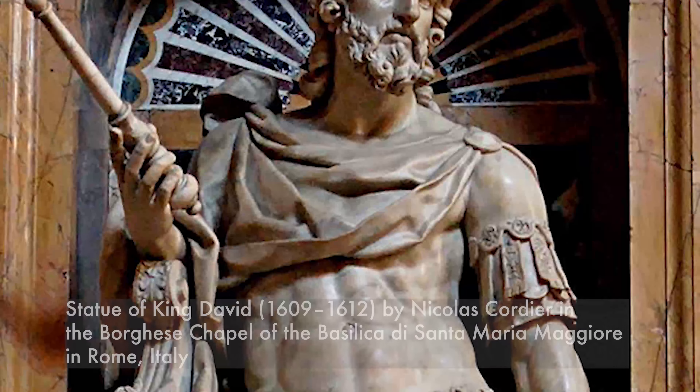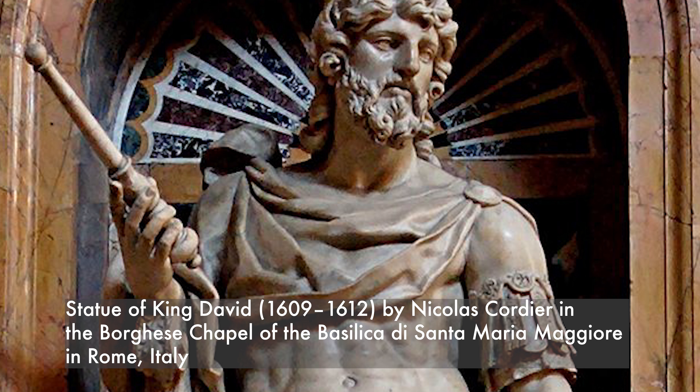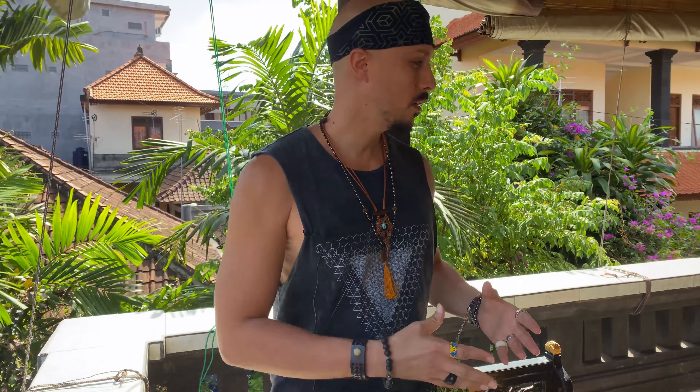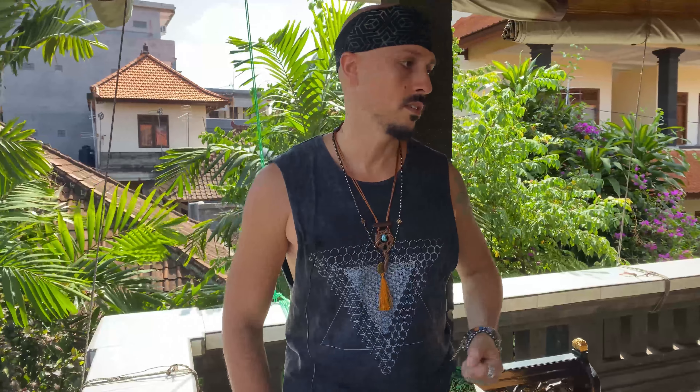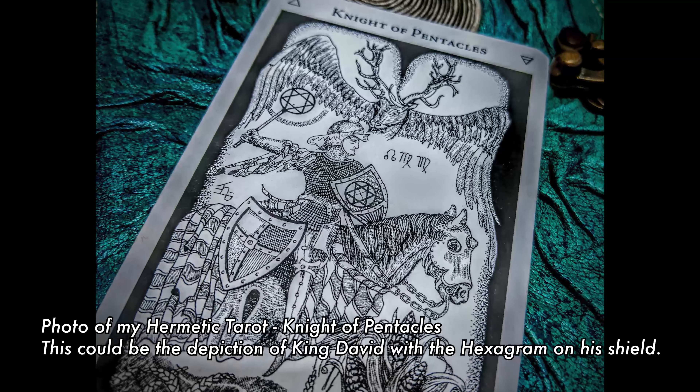Why do Jewish people call it the Star of David? It is said that it used to represent a shield or protection from God during battle for David — that David used this shield represented by the star to protect him. It wasn't entirely clear whether it was the six-pointed star or something else, but throughout history people made the connection that the Star of David, or the hexagram, is the Shield of David.